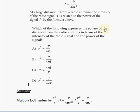So, it gives you a value of i, and let's read. At a large distance r from a radio antenna, the intensity of the radio signal i is related to the power of the signal p by the formula above. Which of the following expresses the square of the distance from the radio antenna in terms of the intensity of the radio signal and the power of the signal?